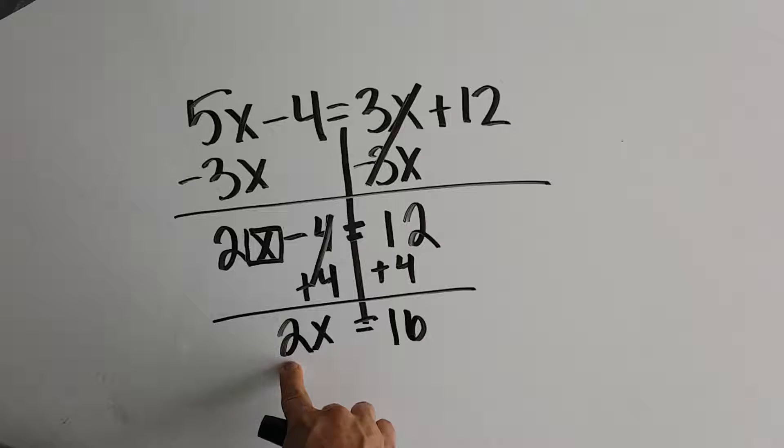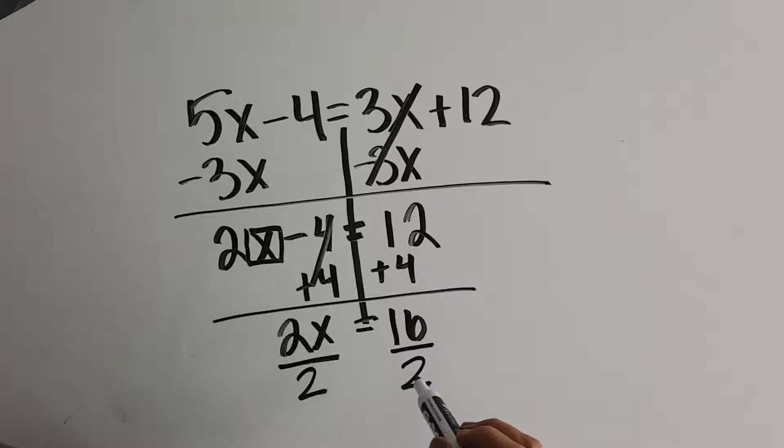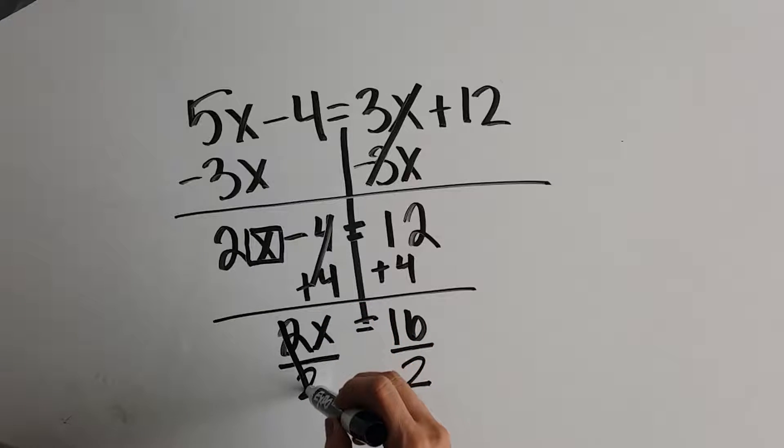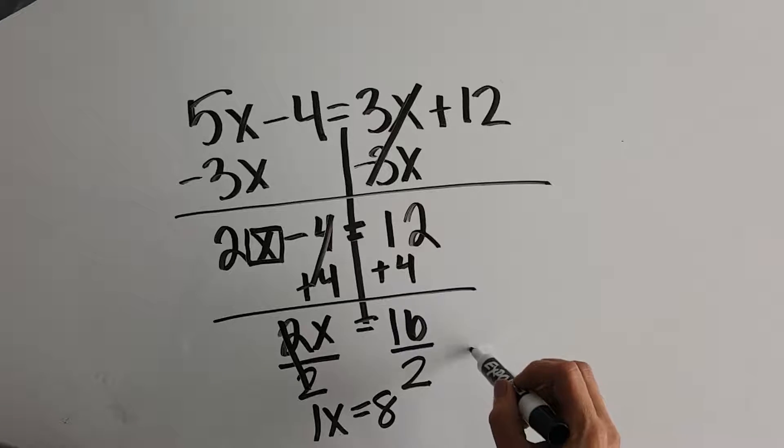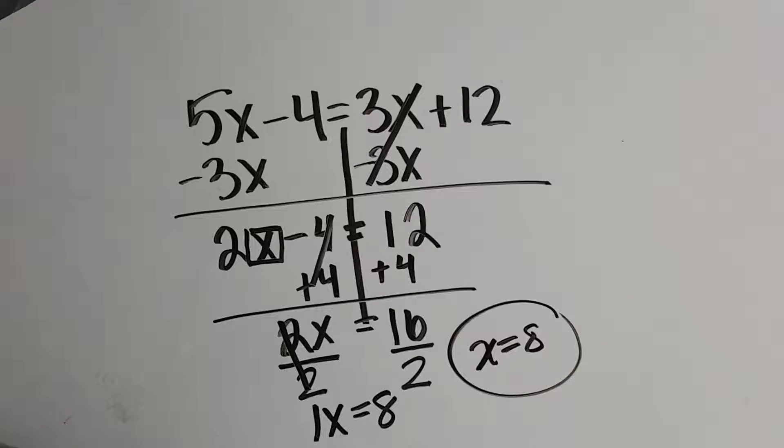Now we see that x is connected to this 2 using multiplication. To undo that, we do the inverse, which is division. Whatever we do to one side, we do to the other. 2x divided by 2 is 1x. 16 divided by 2 is 8. So our final answer would be x equals 8. Let's take a look at a second example.